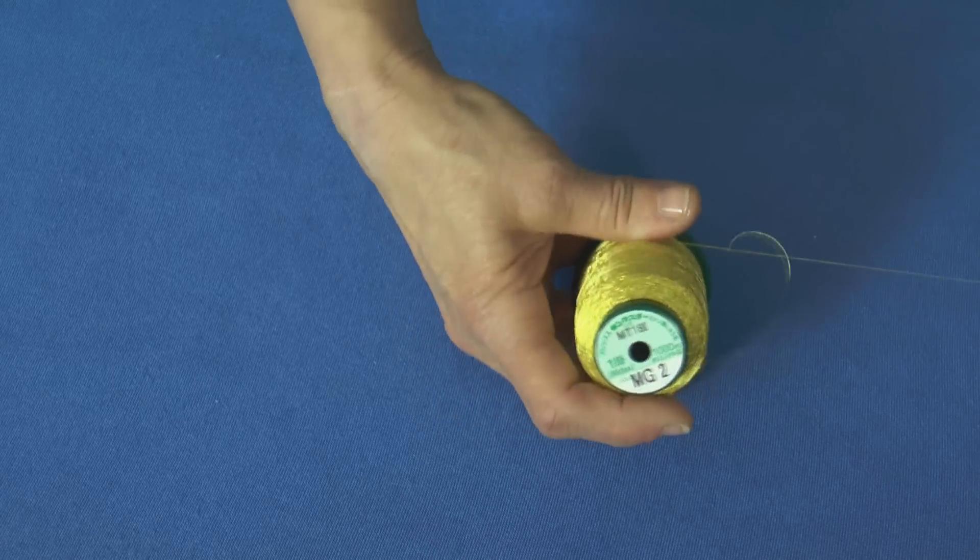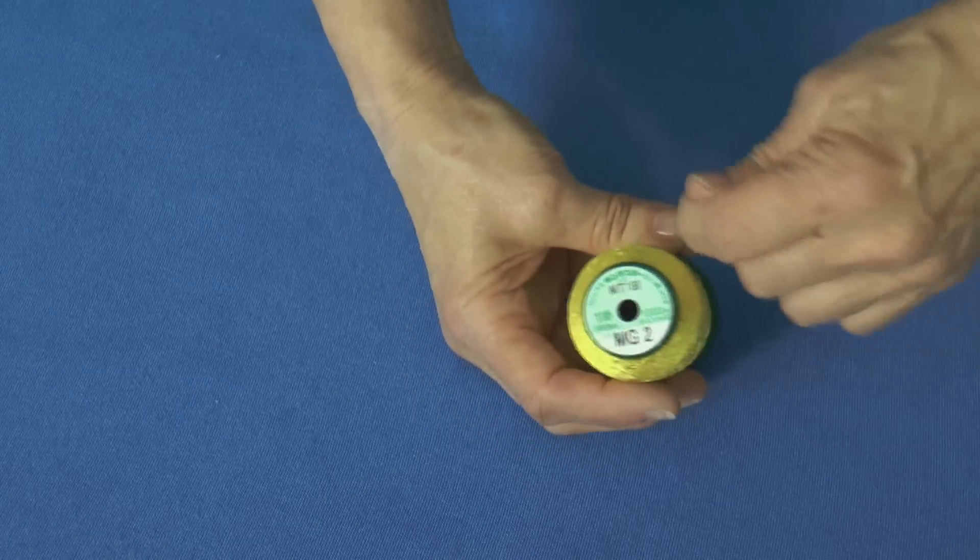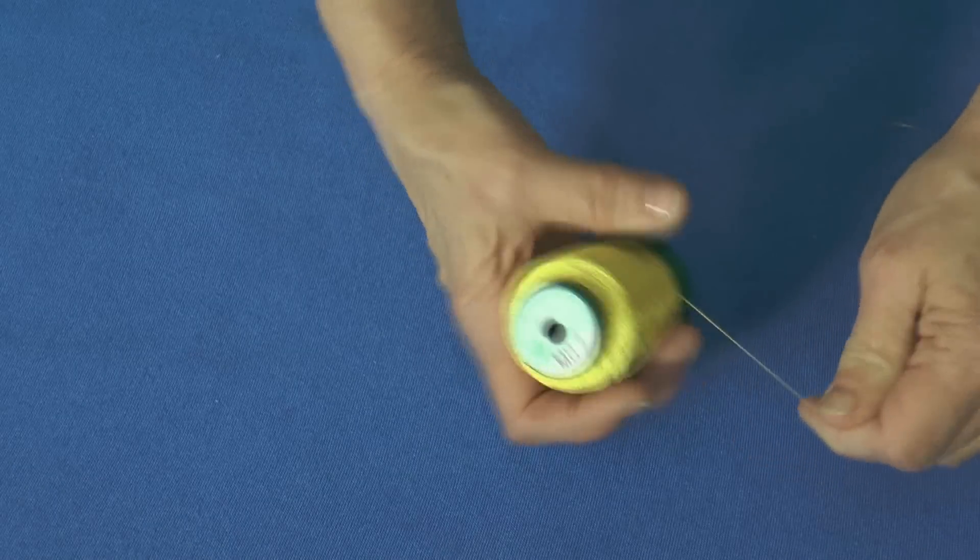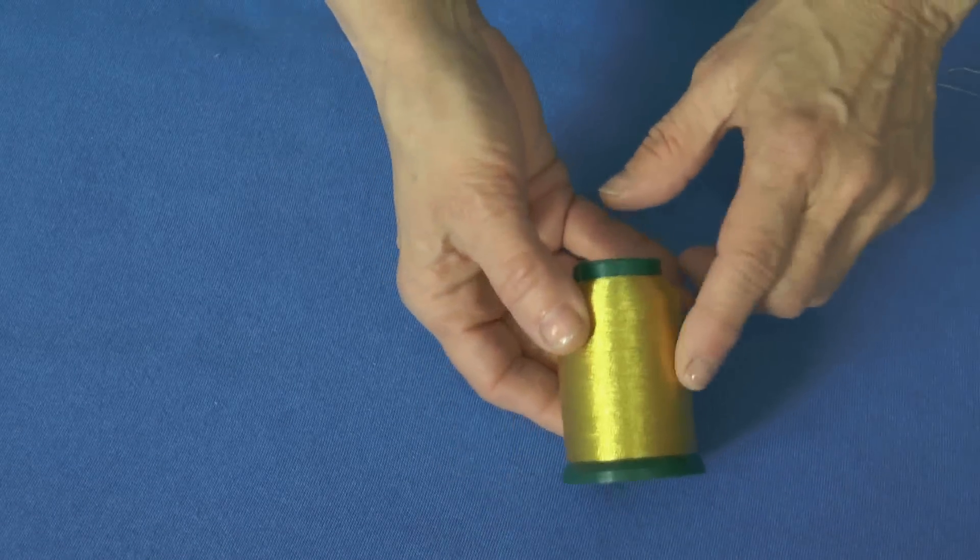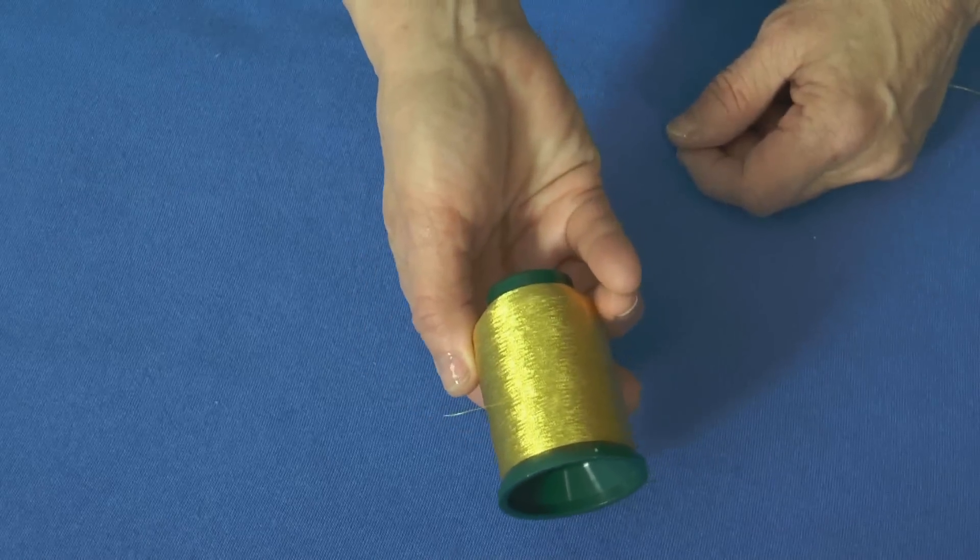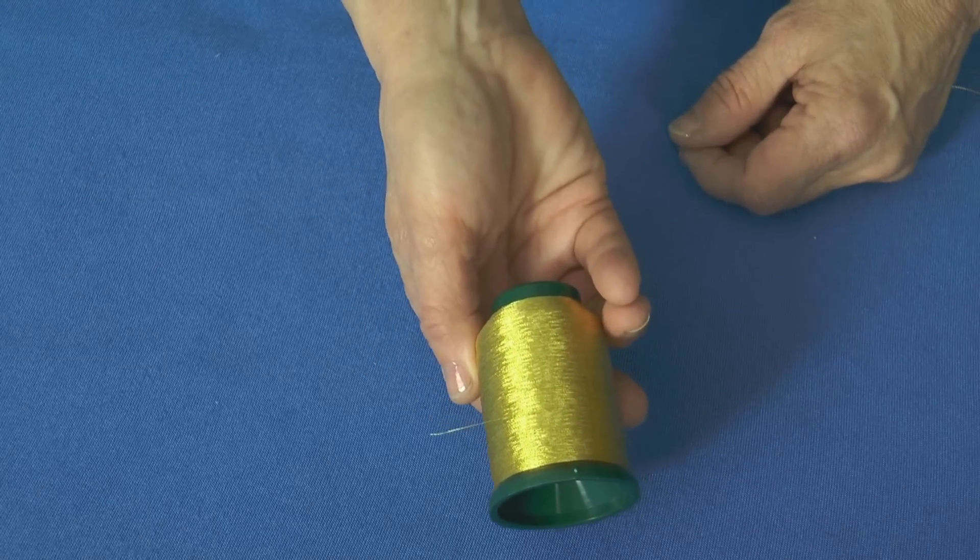Then just pull it snug and snap it off. Now you've tied it off just like it came from the factory and it's ready to go back on the rack.